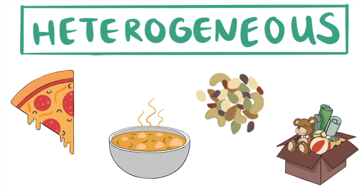In all of these, you can see the separate parts — like the toppings and cheese on the pizza, the chicken and noodles in the soup, the nuts and chocolate in the trail mix, and the different toys in the toy box. Most mixtures we see are heterogeneous mixtures.